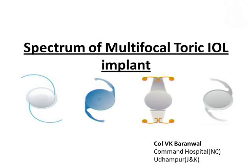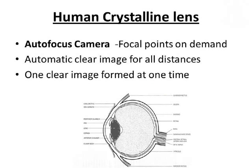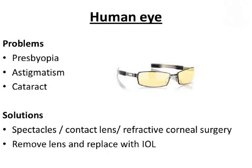Thank you, Nugit Pariyasar, for giving me the opportunity to talk about the latest types of IOLs. As you all know, the human crystalline lens acts as an autofocus camera. By providing focal points on demand, automatic clear images are formed for all distances, and one clear image is formed at one time.